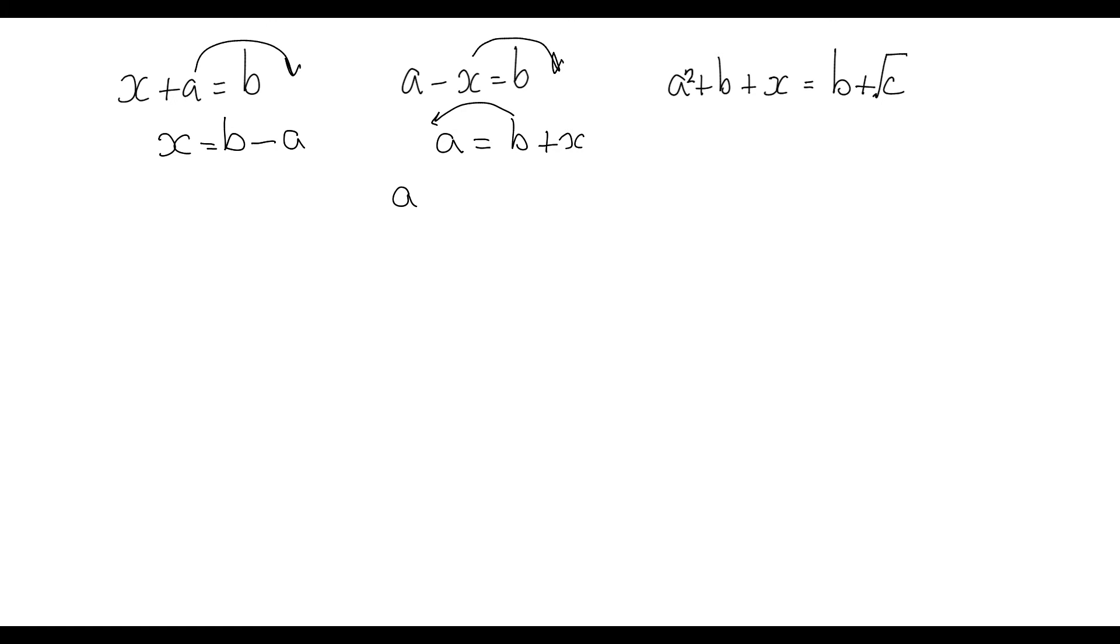The a was there first. It's been joined by b, which is positive on the right-hand side, so it's negative on the left, equals x. By convention, we have the x first, so it's x equals a minus b.